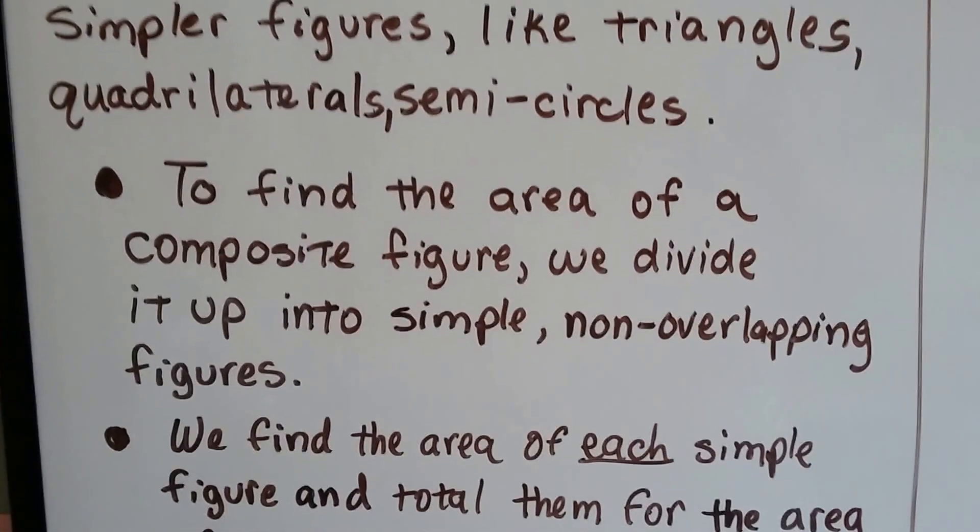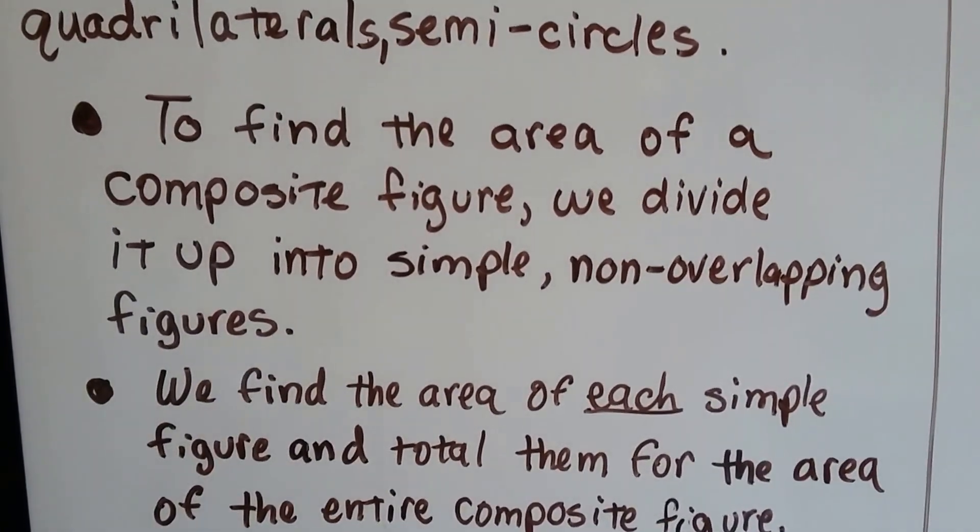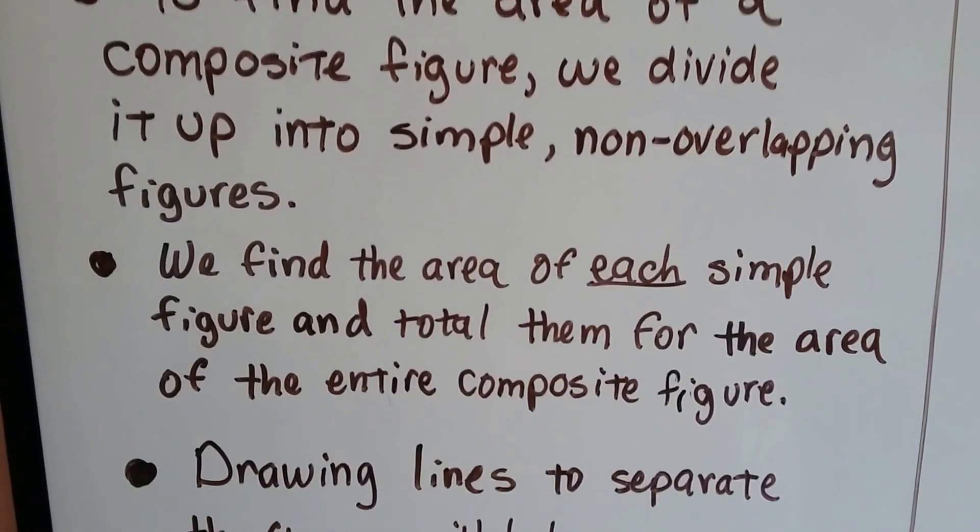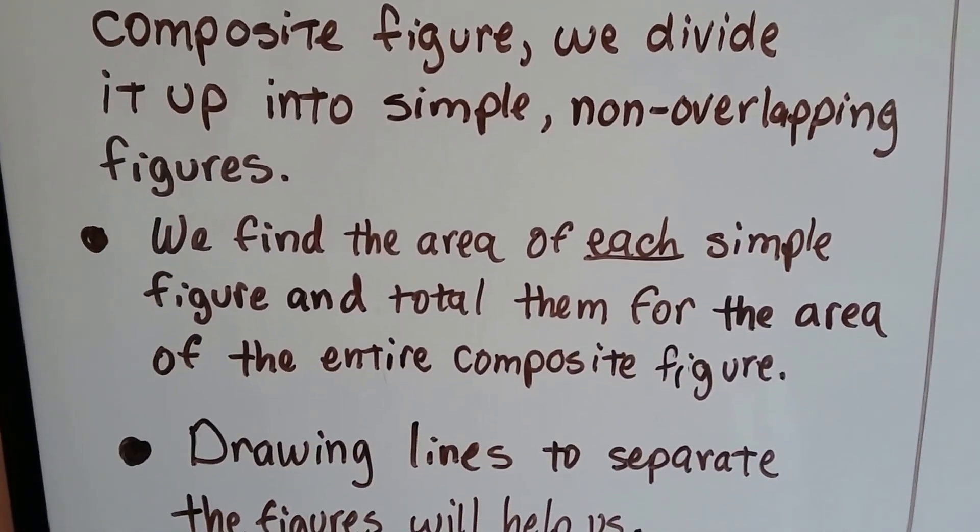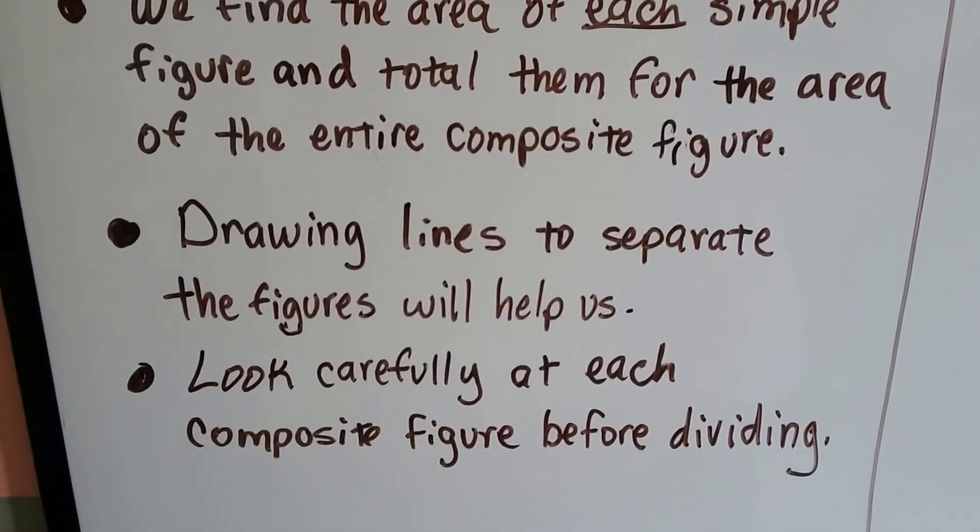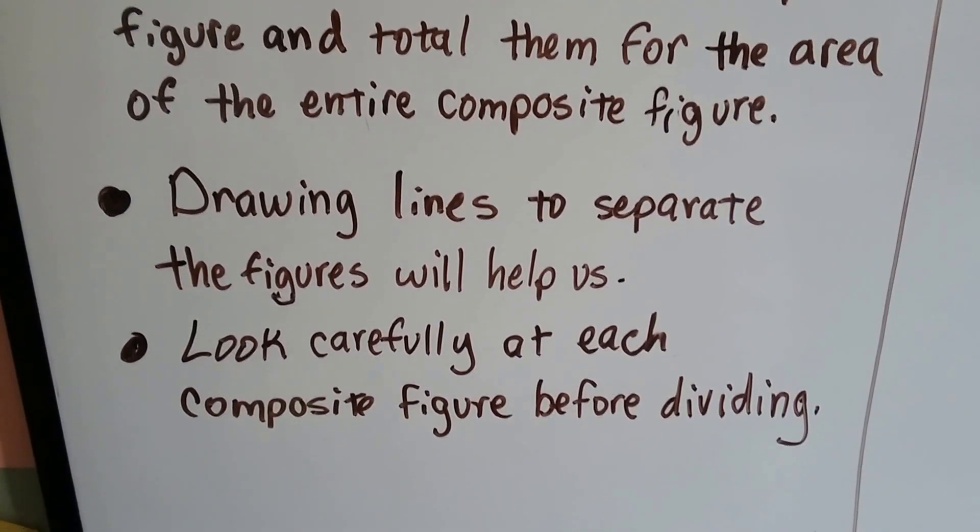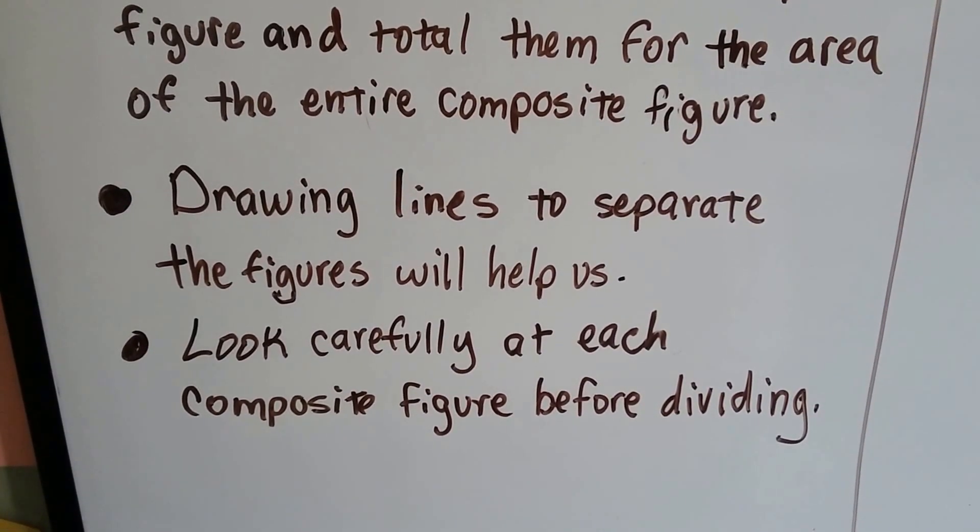To find the area of a composite figure we divide it into simple, non-overlapping figures. We find the area for each simple figure and total them for the area of the entire composite figure. Drawing lines to separate the figures will help us look carefully at each composite figure before dividing.